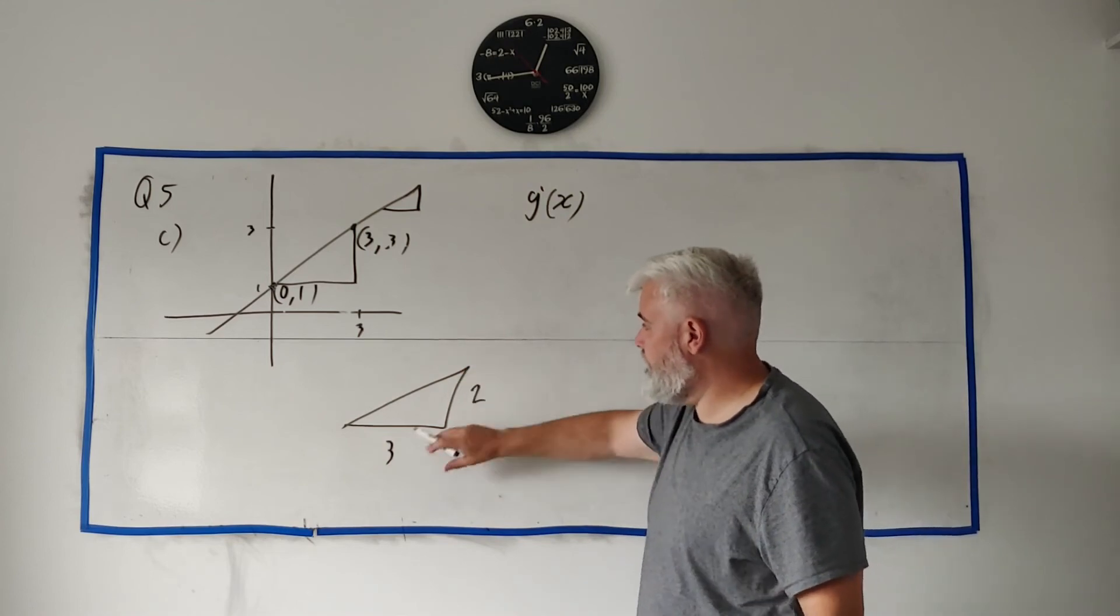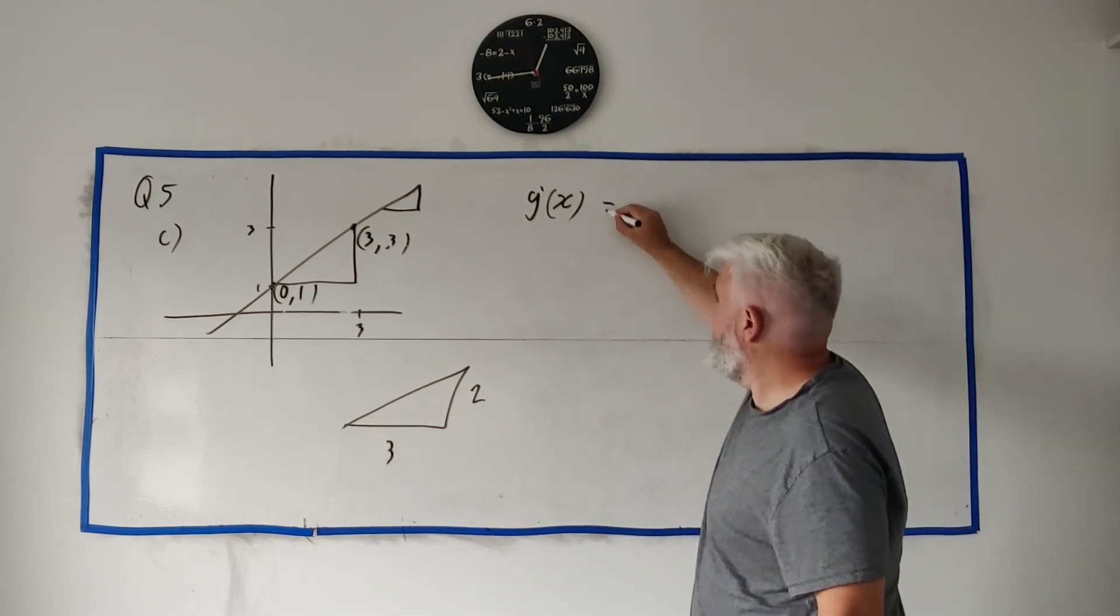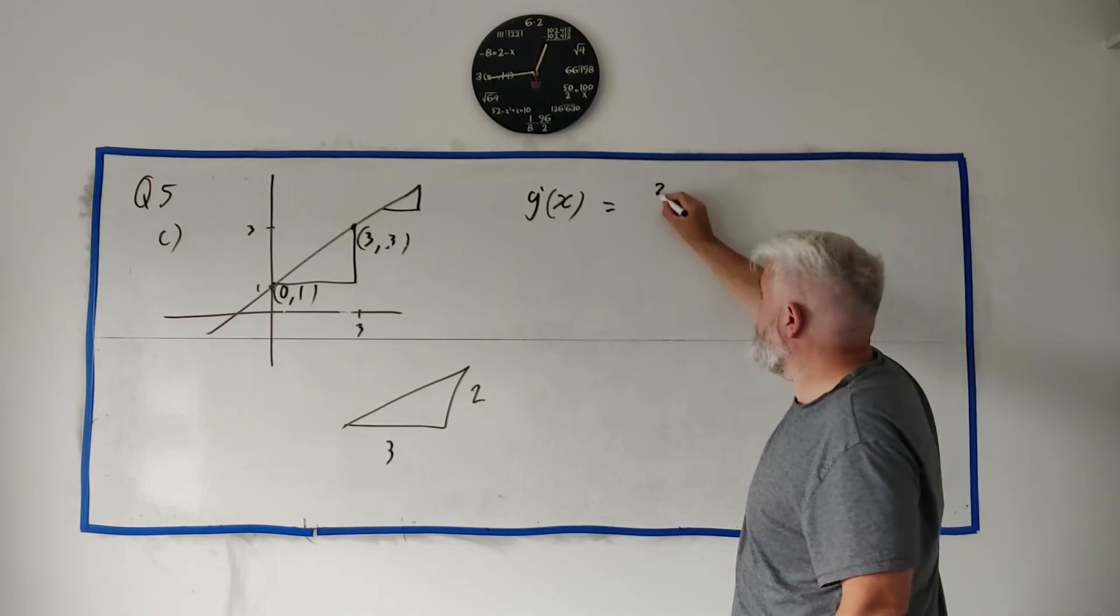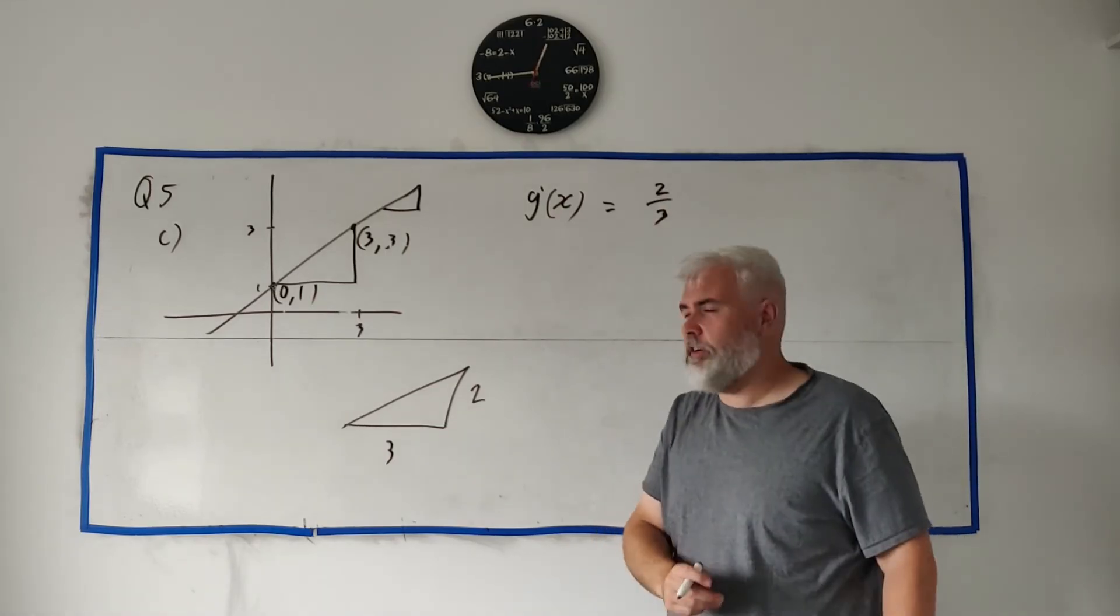So the slope of this line is its height divided by its width. Its slope, or g dash x, is just two divided by three. Just be slightly careful.